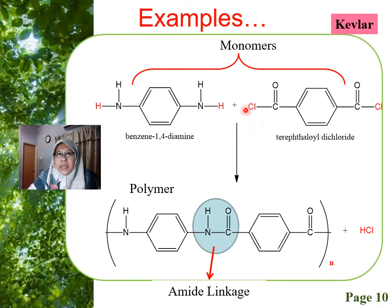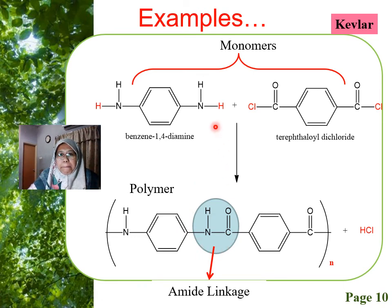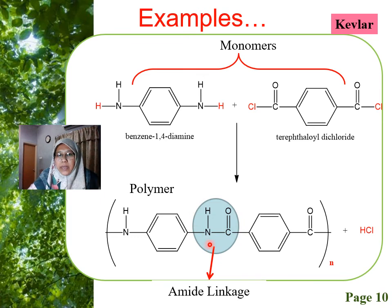Another example is Kevlar. Kevlar uses benzene-1,4-diamine and terephthaloyl dichloride, which is a type of acyl chloride. We are going to form an amide linkage because the acyl group reacts with the amino group, giving C double bond O attached to NH. This is the amide linkage.